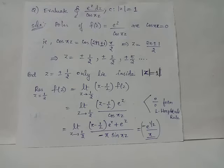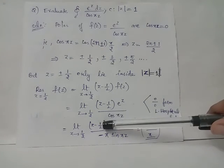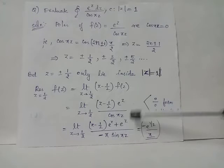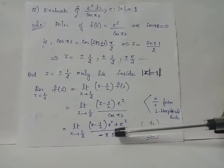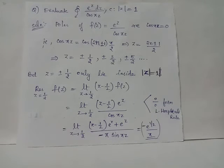The derivative of the denominator cos(πz) is −π sin(πz). Applying the limit z → 1/2, the term (z − 1/2)e^z becomes 0 and the remaining numerator term becomes e^(1/2). In the denominator we have −π · sin(π/2), and since sin(π/2) = 1, the residue of f(z) at z = 1/2 is −e^(1/2) / π.